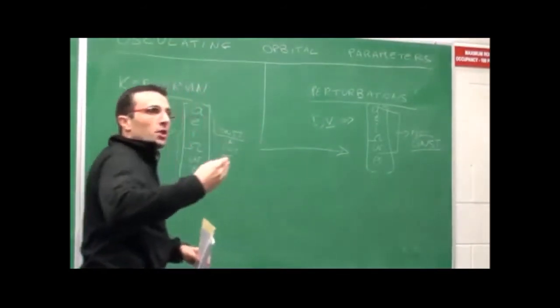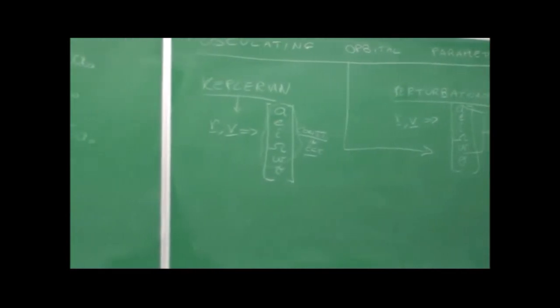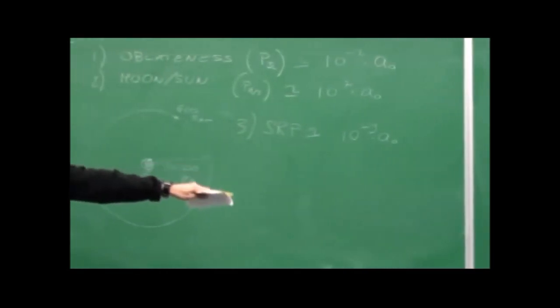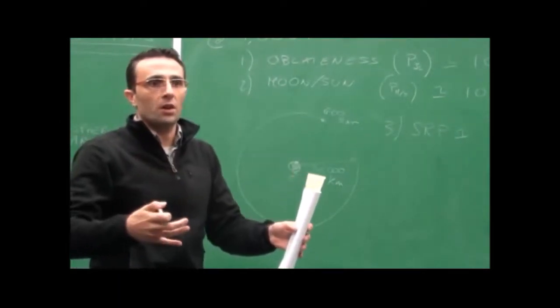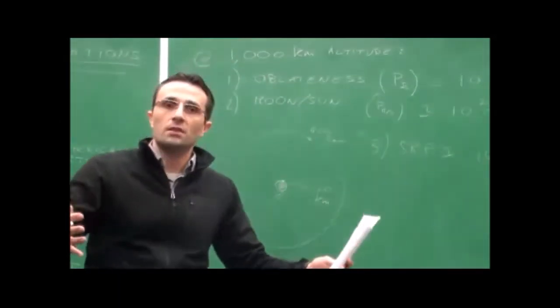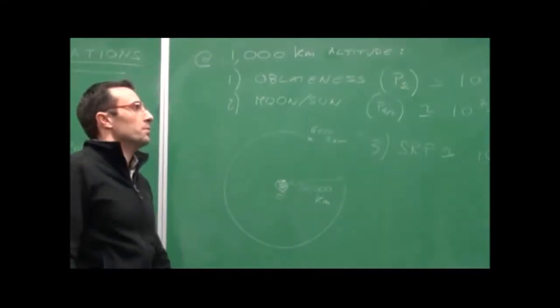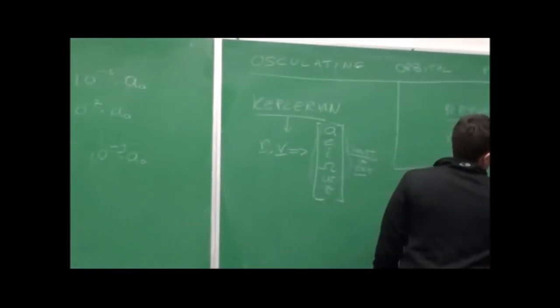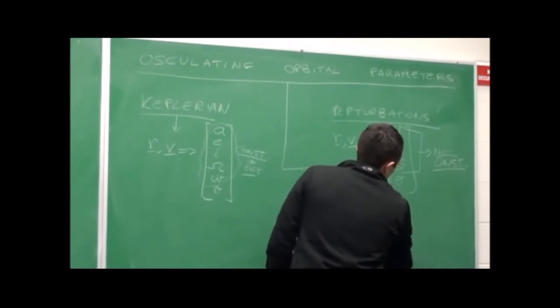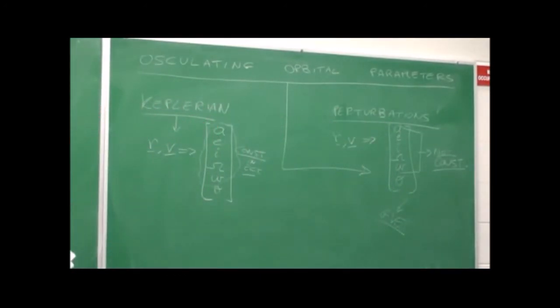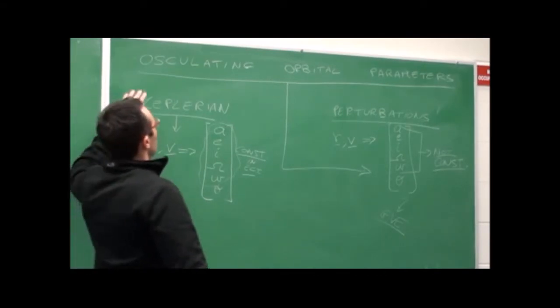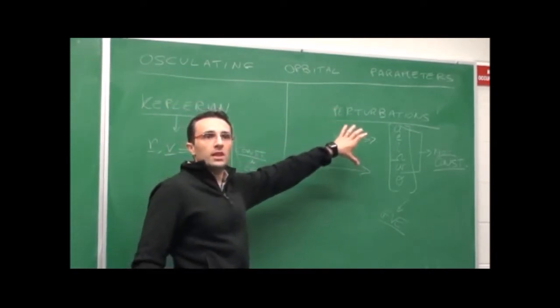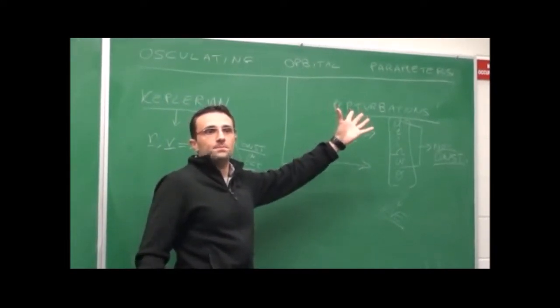And so these orbital parameters that are changing are what we call the osculating orbital elements. They are basically your current orbital element. If you were to imagine that at this particular moment in time, you remove all the perturbations, P disappears, you become Keplerian all of a sudden. So those are the corresponding orbital parameters from that point on. But unfortunately, that's not the case. So in the next time step, whatever that is, you have to compute them again. Except, we don't have to really do that. Because as we will derive at some point, there are some equations, differential equations, that tell you how those parameters change depending on the perturbation that you have.